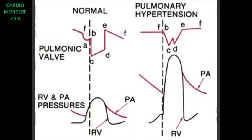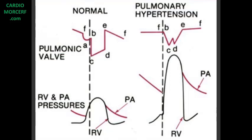If there is pulmonary hypertension, we are going to see some alterations in the movement of this valve. Notice that the valve lost its diastolic anterior-posterior movement — it may be horizontal. It has also lost the A-wave. Why does it happen? Because of the high pressure in the pulmonary artery, the increase in diastolic right ventricular pressure due to right atrial contraction is not enough anymore to initiate the opening of the pulmonary valve. The A-wave disappears.